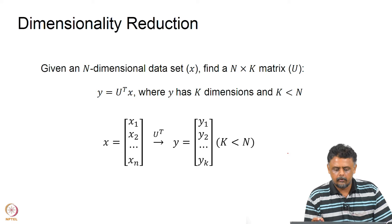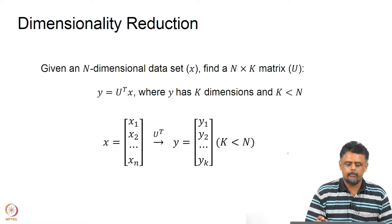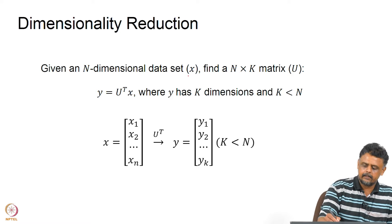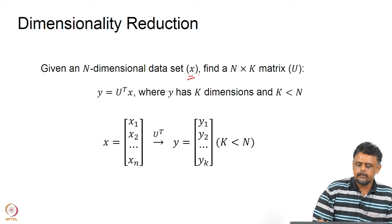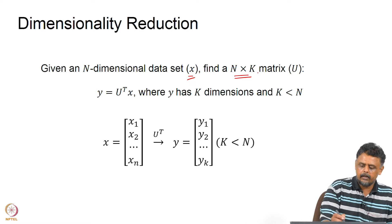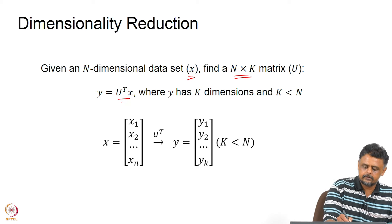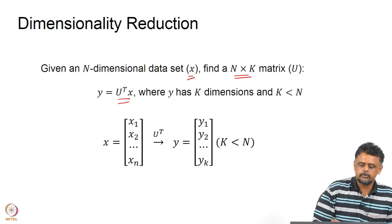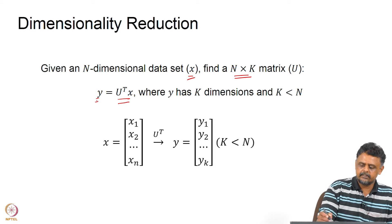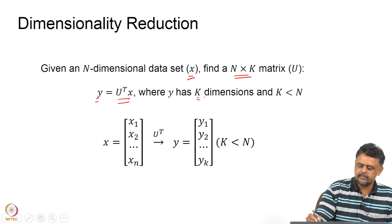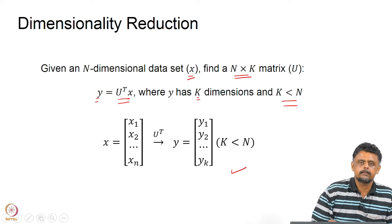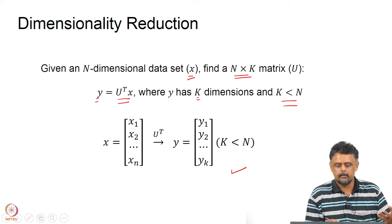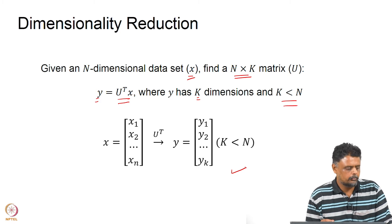Mathematically, if you have a given n-dimensional data set X, our idea is to find an n-by-k matrix U so that when we apply U-transpose times X, we get a new data Y which has reduced dimension k, which is less than n. That is precisely what we want to do in terms of linear algebra or matrix operations.